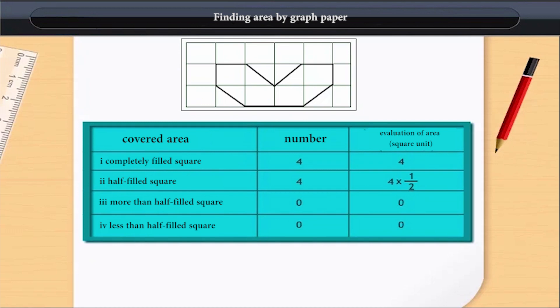Hence, number of completely filled squares is 4. Also, we take half filled squares as 1/2 square units. Hence, the area is half of 4 multiplied by 2.